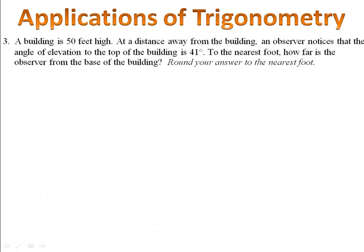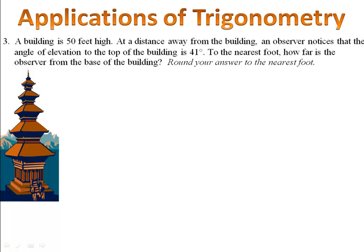In example three, we have a building that's 50 feet high. We have an observer and he knows that the angle of elevation looking up from the ground to the top of the building is 41 degrees. The question is, how far away from the base of the building is the observer?